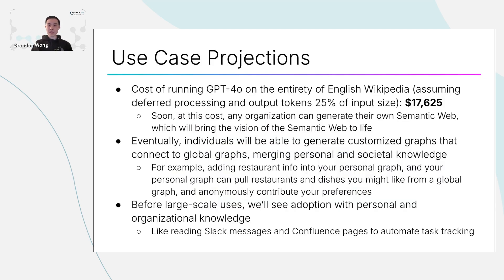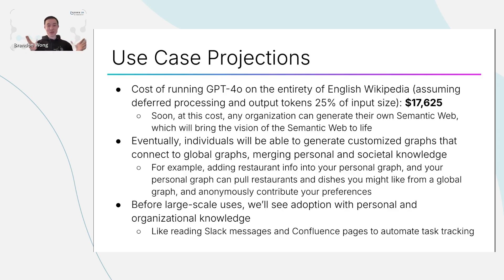In terms of future use cases, this is where it starts to get very interesting. One interesting fact: the cost of running GPT-4o on the entirety of English language Wikipedia — assuming OpenAI's deferred processing and that output tokens are about 25% of the input size — is only $17,625 today. Given the cost projections we've looked at, once we bring the cost of effective graph generation down to the cost of GPT-4o or lower, any organization could just afford to spend a few thousand dollars and generate their own semantic web on all of human knowledge — or at least all of English Wikipedia. That's definitely a representation of a lot of the information that exists out there.